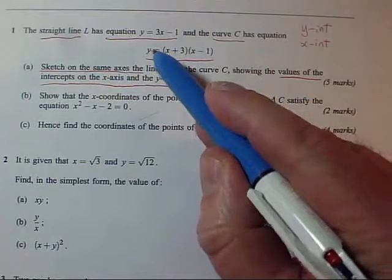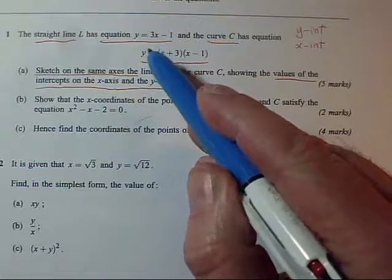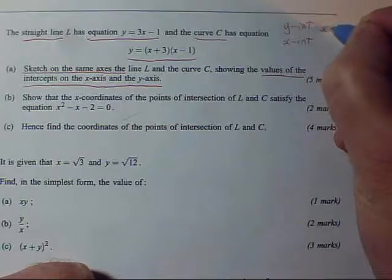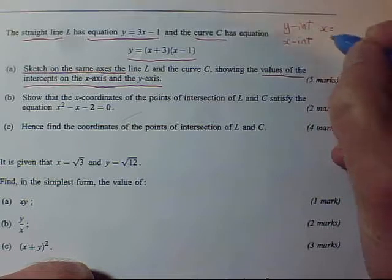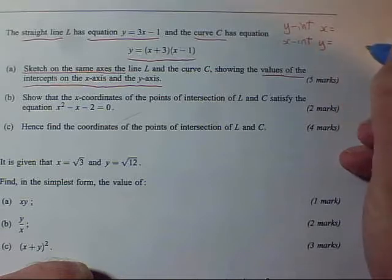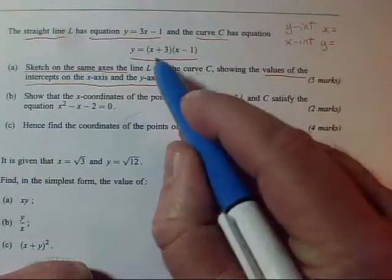For the line, that's all you need to do. The way we get y-intercepts and x-intercepts is always the same. For a y-intercept, x is always a particular value because we're on the y-axis, and for the x-intercepts, y is always a particular value because we're on the x-axis.